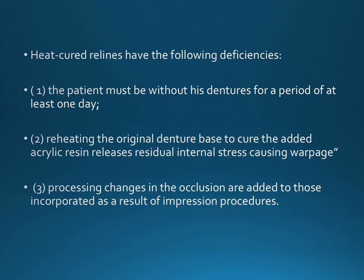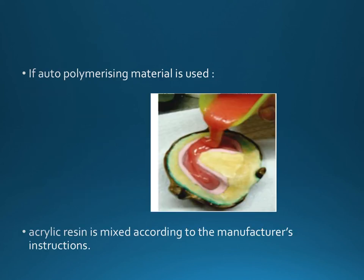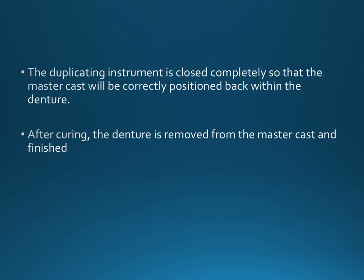Deficiencies of heat-cured relining: the patient must be without the denture for at least one day. Reheating the original denture base to cure the added acrylic resin releases residual internal stress — this is called warpage — which is any bending or twisting out of shape resulting from heat or dampness. Processing changes can also occur. If auto-polymerizing material is used instead, it can be mixed and poured following the manufacturer's instructions; the duplicating instrument is closed completely so the master cast is correctly repositioned after curing.